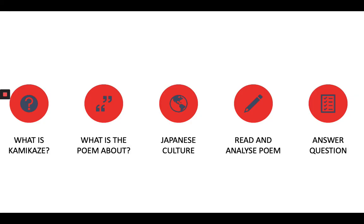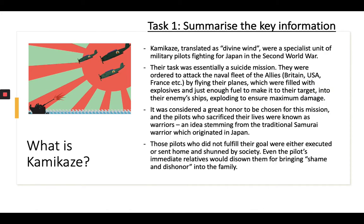There are five main things we're going to do in today's lesson: we're going to talk about what kamikaze is, what the poem is about, we're going to look at a little bit of context in terms of Japanese culture, we're going to read and analyse the poem, and then you're going to answer a question about the poem. Task one will require you to summarise the information I'm going to talk through. You can do that in any way you want — bullet points, a mind map — it's important that you get the key parts down. Feel free to pause at any point if you need to finish off your notes before I move on to the next slide.